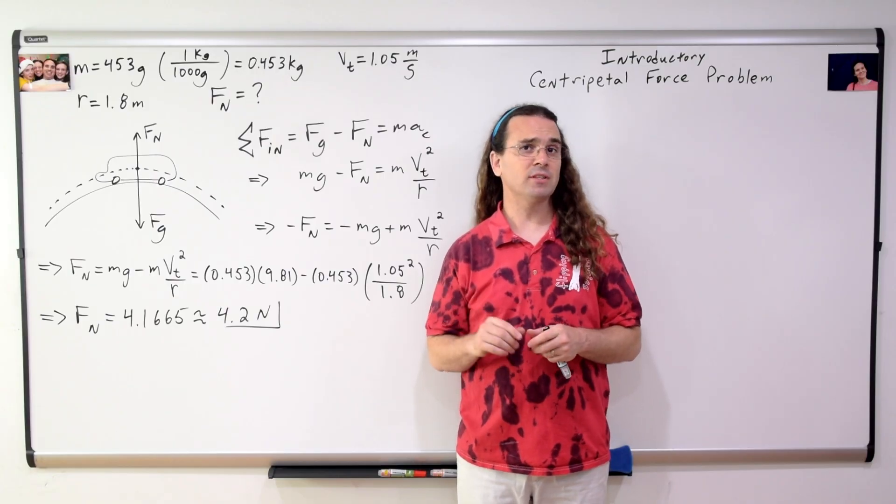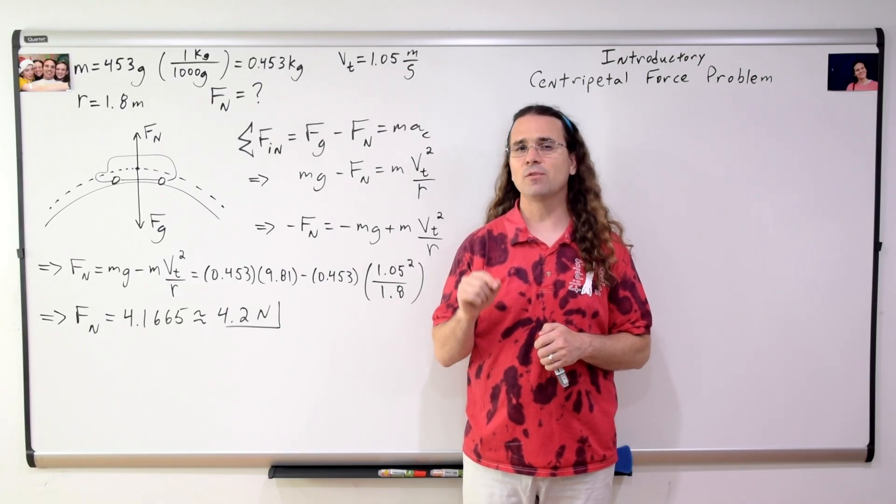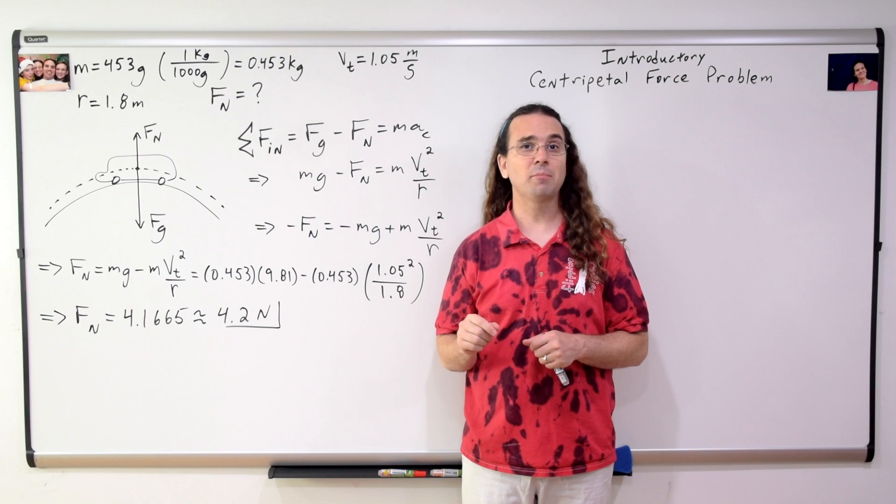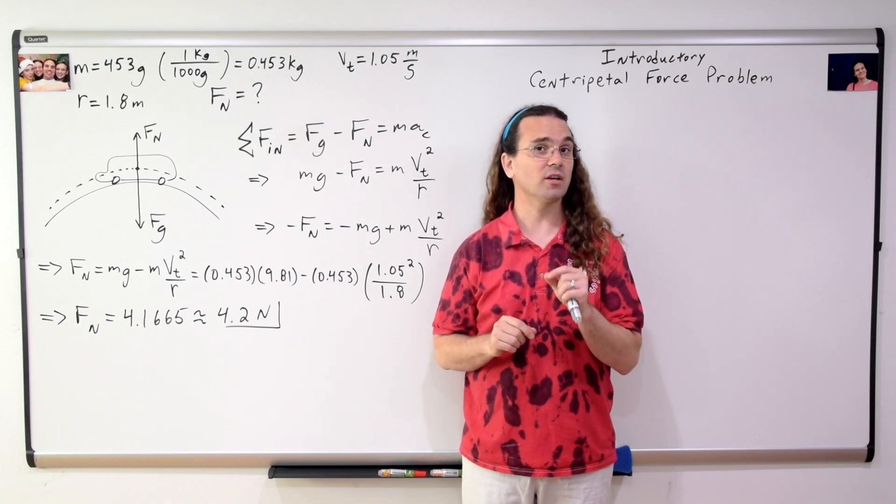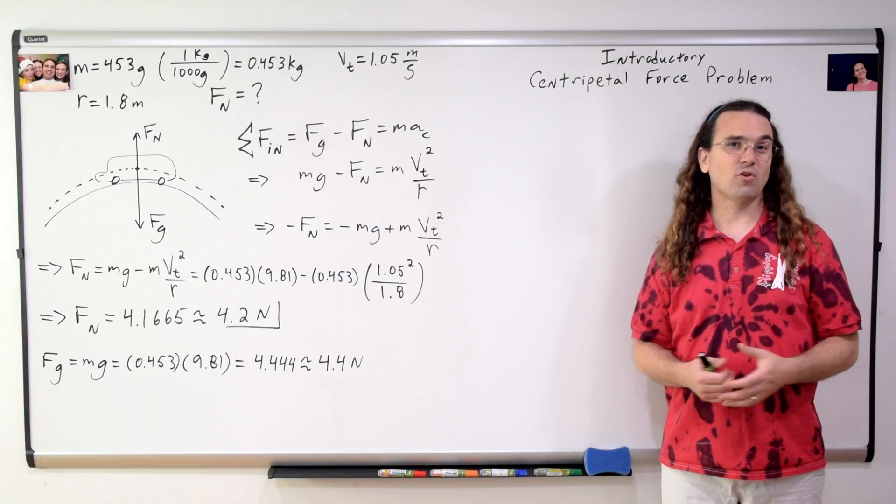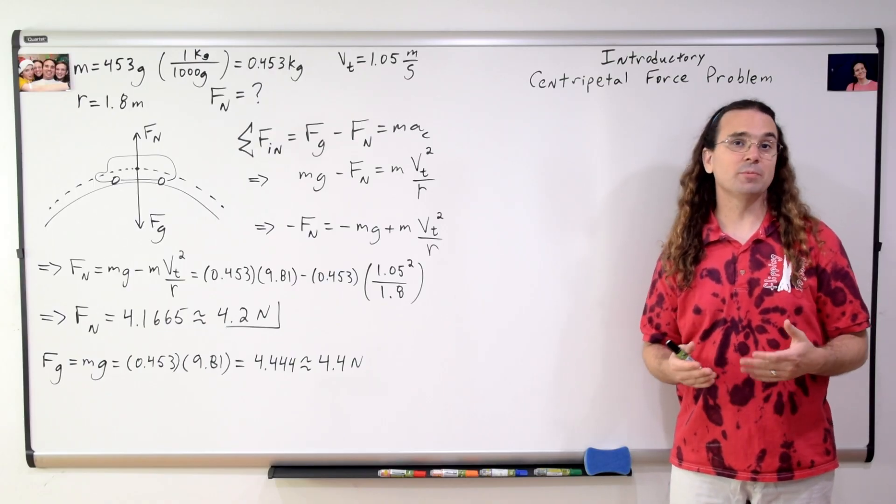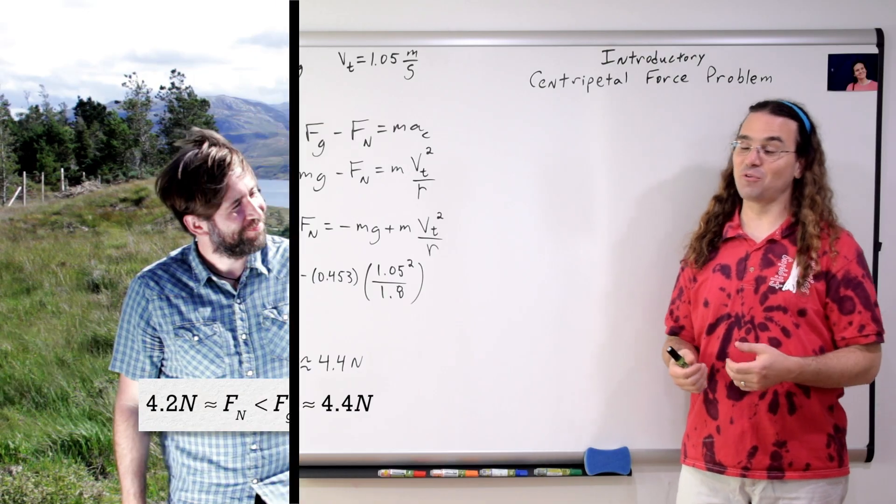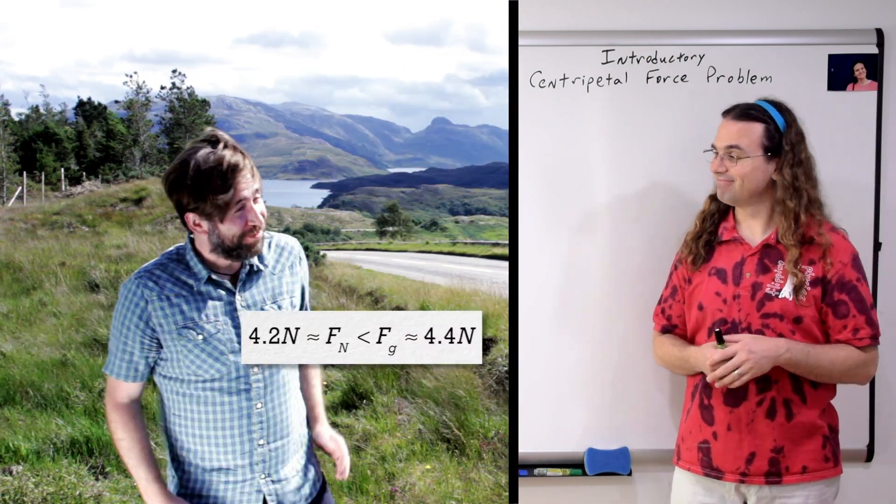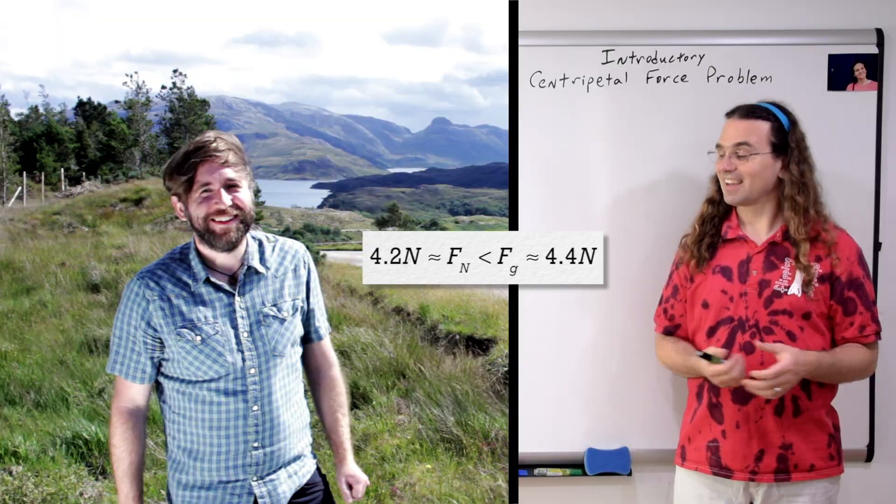Now, an important thing to realize here is how the magnitude of the force normal compares to the magnitude of the force of gravity. The force of gravity acting on the car is roughly 4.4 newtons, which means the force normal is less than the force of gravity. You know you can feel that, right? Hello, Kit.